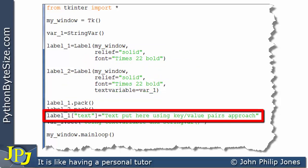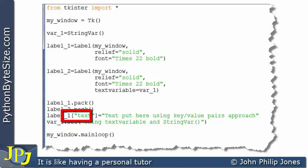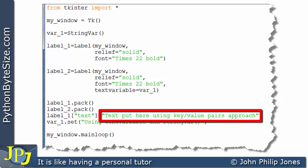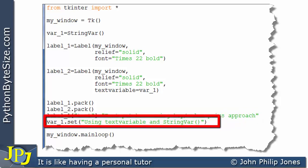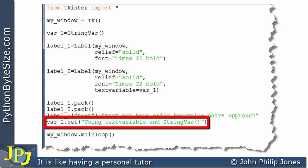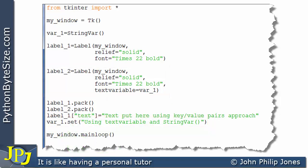And on this line, you can see that's precisely what I have done. I've chosen label 1, and in square brackets, I've put the word text in quotes. Now, that's the key, and I'm assigning to that this value. And I'm just saying text put here using key value pairs approach, just so that when we see the program, you can see what this line actually did to a label. And what this line is doing, it's going to set this label using the set method. So we can see there are two ways in which we can change a label's content at runtime.